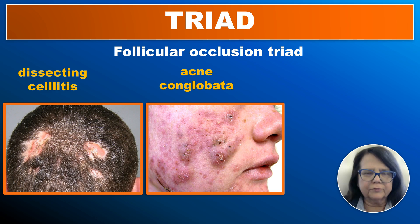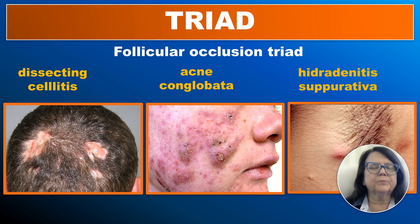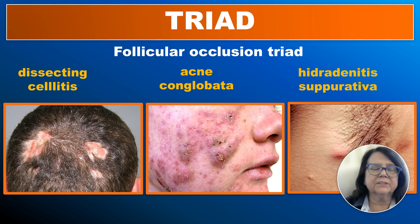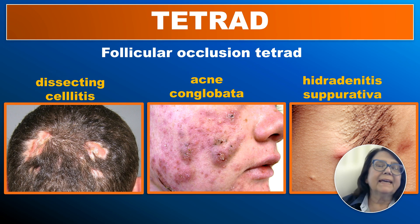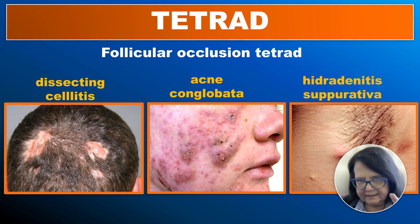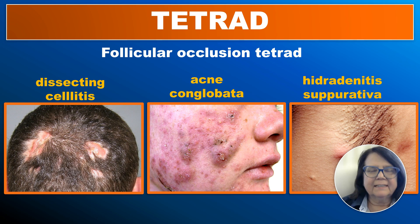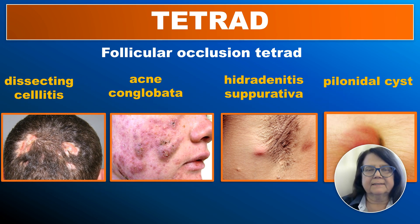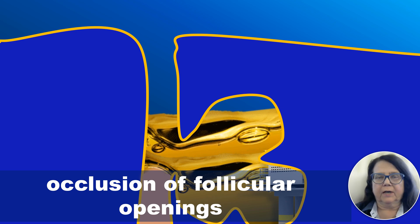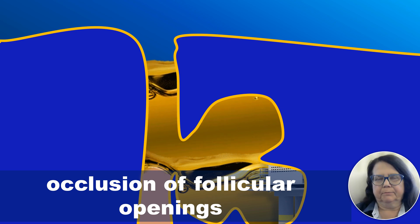Dissecting cellulitis very often coexists with acne conglobata and with hidradenitis suppurativa, and when these three diseases coexist in one patient, we call it the follicular occlusion triad. Very rarely, there are four diseases of a similar pathogenic background in one patient — the three diseases plus also a pilonidal cyst. All these diseases seem to have a common pathogenic background.